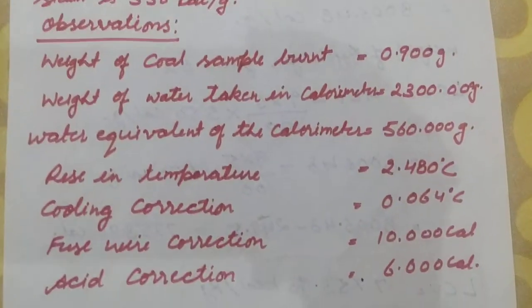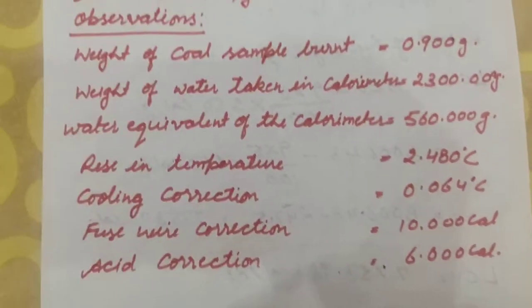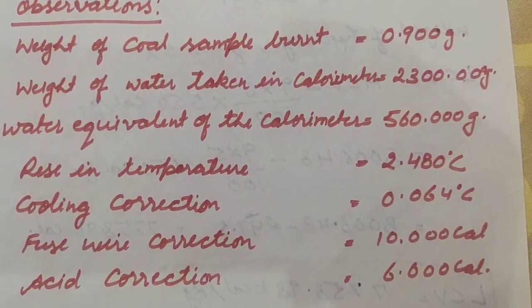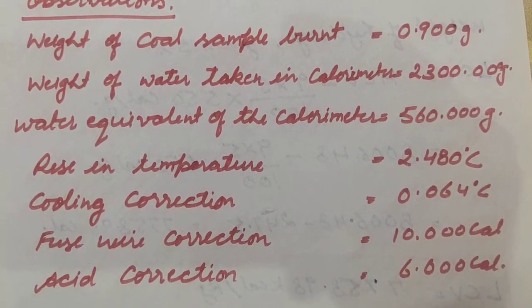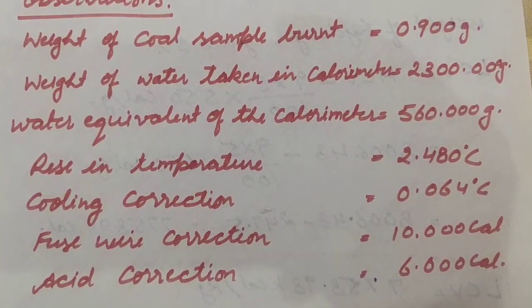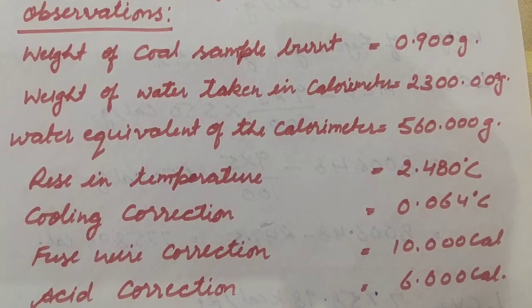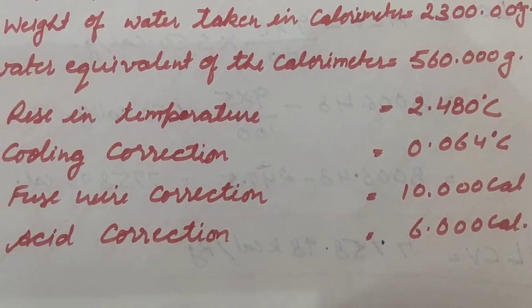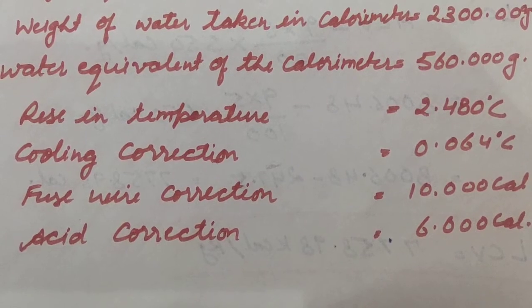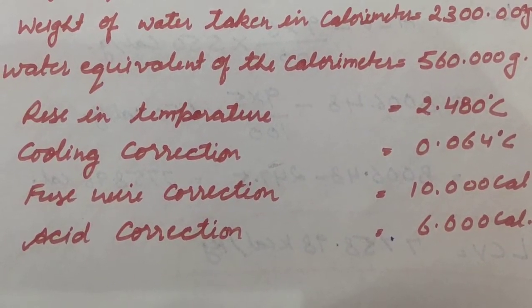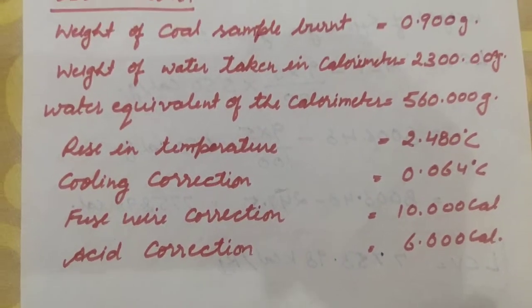Now the observations: weight of coal sample burnt is 0.90 gram; weight of water taken in calorimeter is 2300.000 gram; water equivalent of calorimeter is 560.000 gram; rise in temperature is 2.480 degrees centigrade; cooling correction is 0.064 degrees centigrade; fuse wire correction is 10 calories; and acid correction is 6 calories.